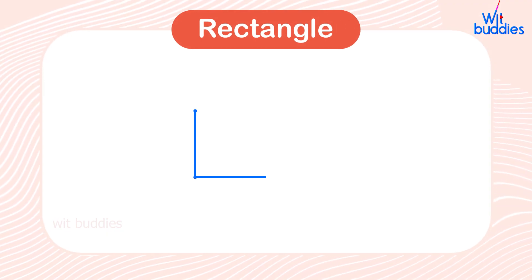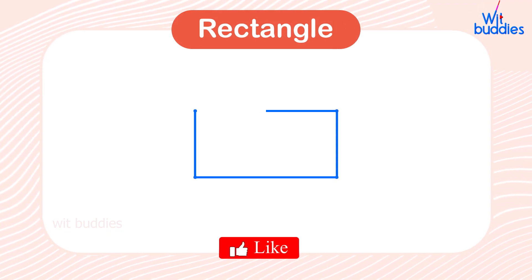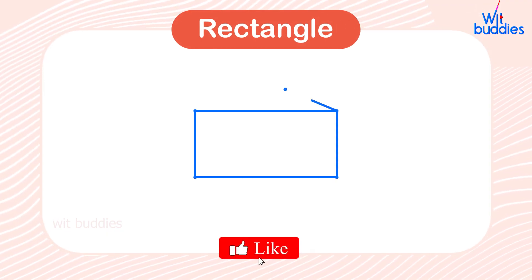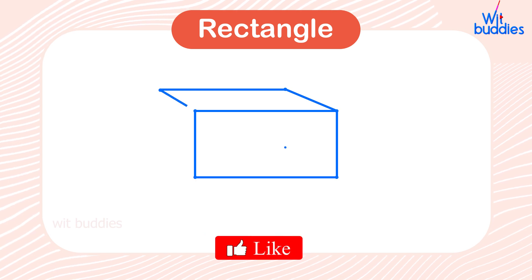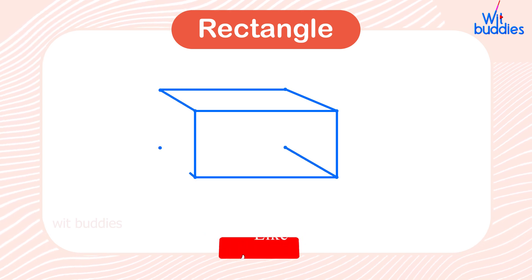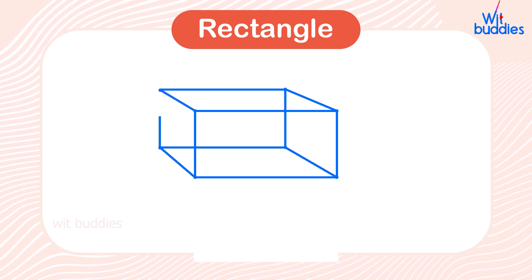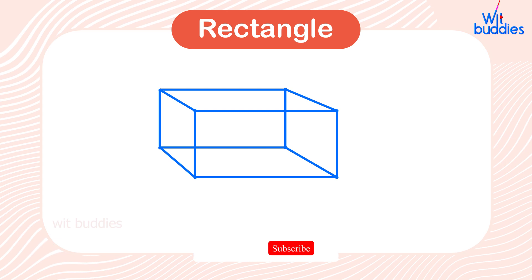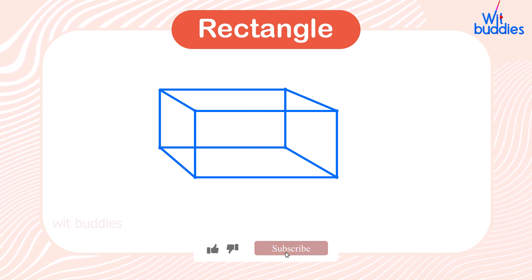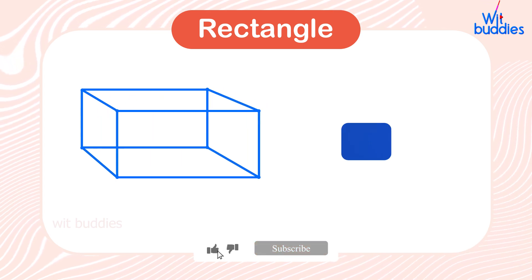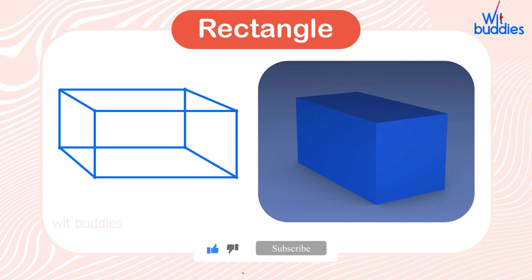Rectangle: a rectangle has four sides, where the opposite sides are equal and parallel to each other. All the angles of a rectangle are equal to 90 degrees.